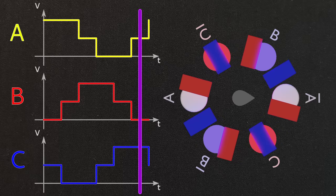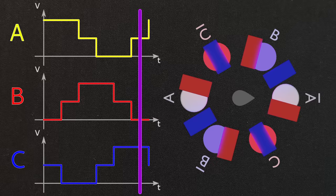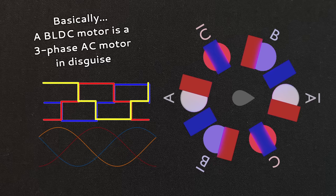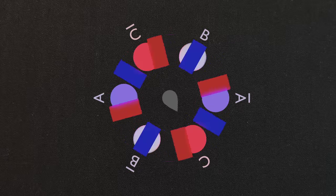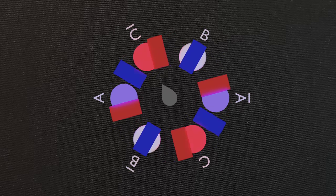As we can see, the rotor has now rotated by 90 degrees. And if we were to repeat these 6 steps again, it would rotate another 90 degrees. The job of the speed controller then, is to do these 6 steps extremely quickly, with roughly the correct timing.